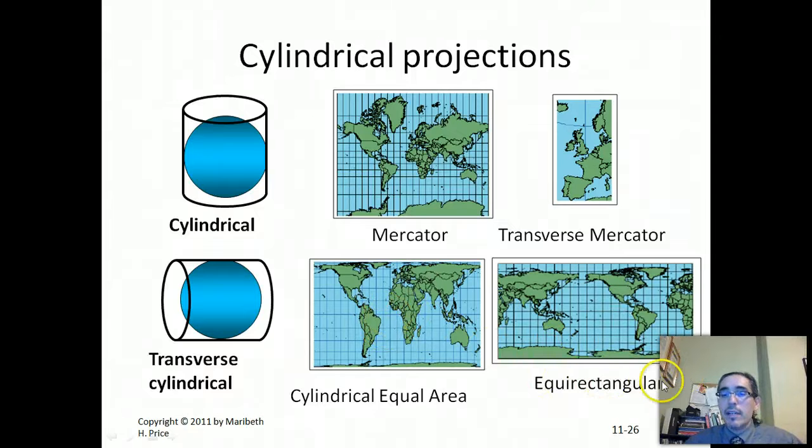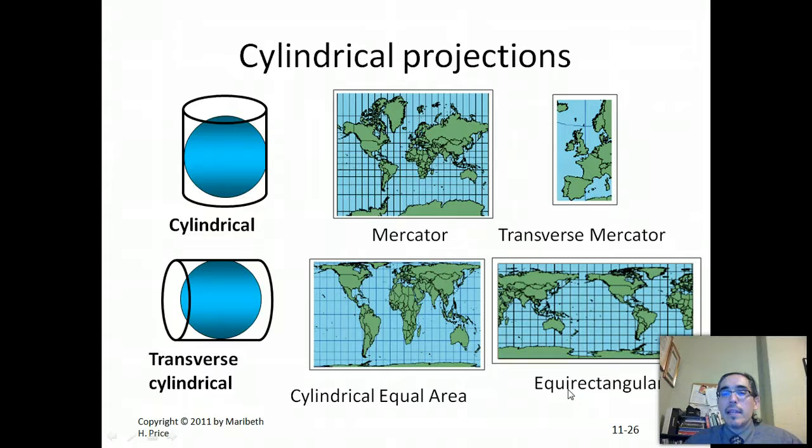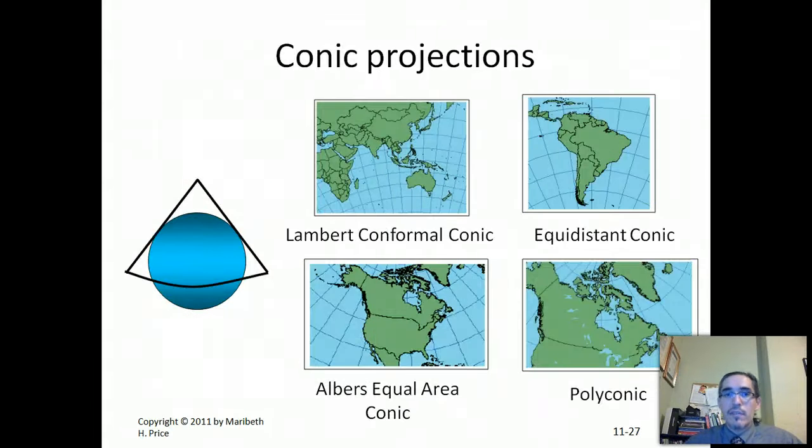Same thing with equirectangular. So the equi has to do with the distance in this case. And this is a reference to the way that the projection was constructed, although you could never really go off the names. To be honest, it is more appropriate if you're looking at a projection to read the metadata about that. The documentation explains how the projection was constructed and how it can be used safely.